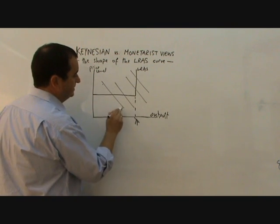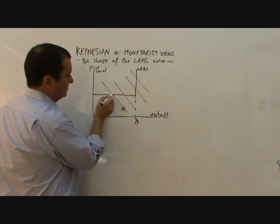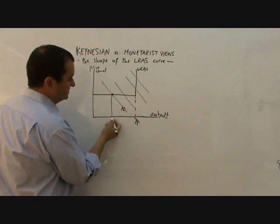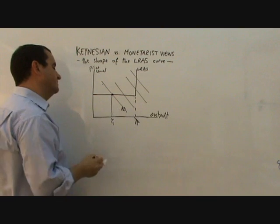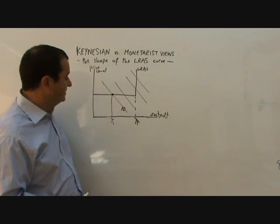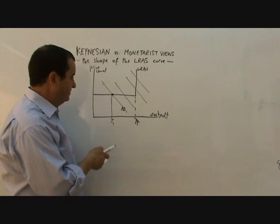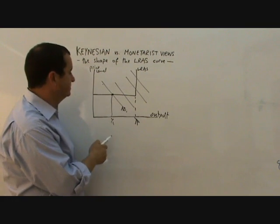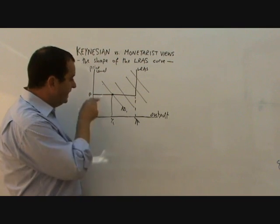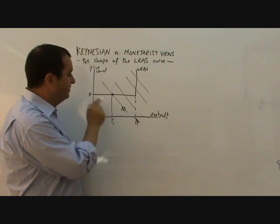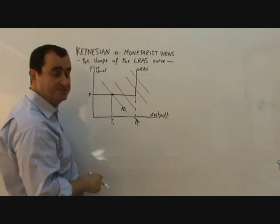If aggregate demand is here and we're at this point, we're deep, deep, deep in recession, and the level of output is well below the potential full employment level of output. The difference here is that the Keynesians believe that this is a long-run position. It's possible that the economy is permanently in recession and permanently producing less than its full potential.